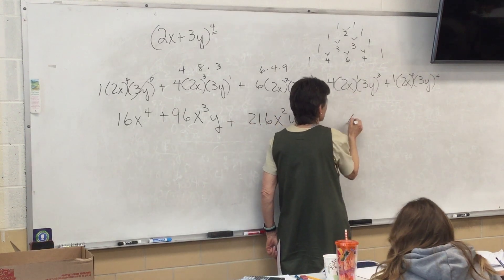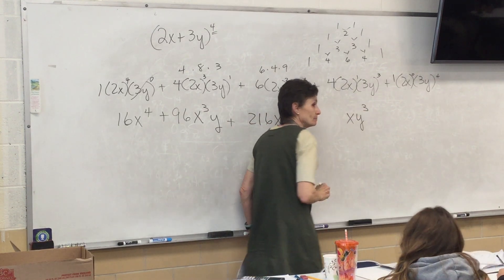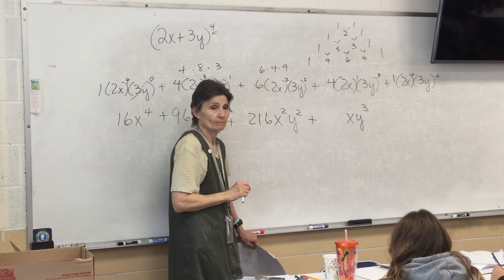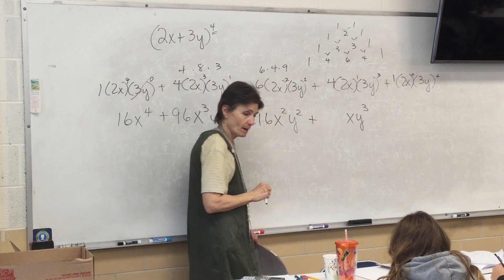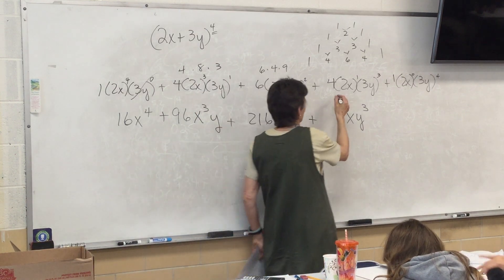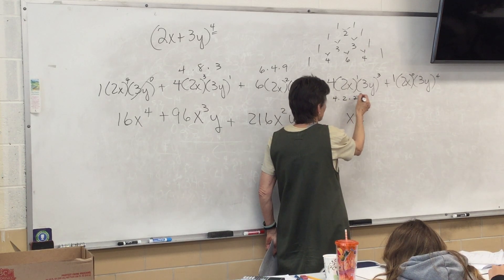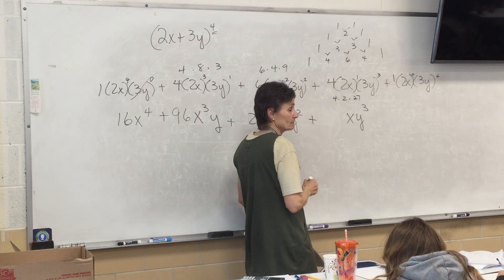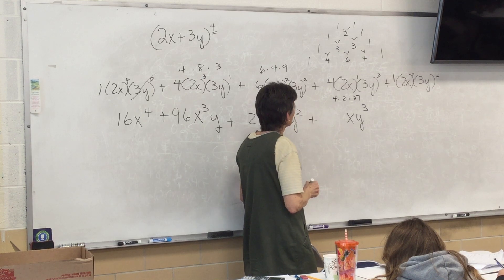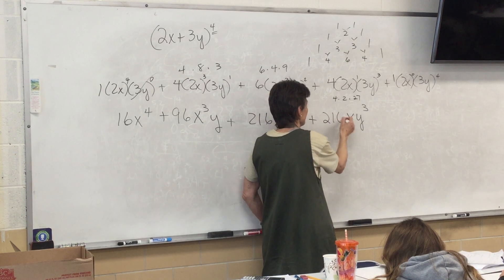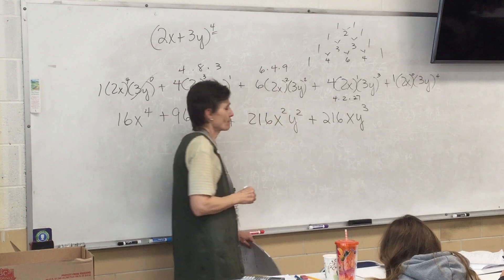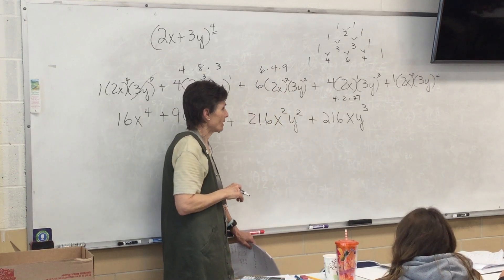All right. I know the next one is going to be x, y cubed. What are my numbers? 4, 2, and 27. Is that also 216? Yeah. 216. Coincidence. It doesn't always happen.